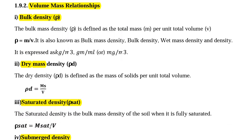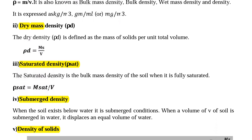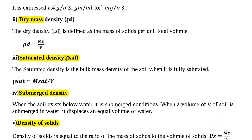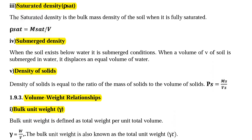Next we are going to see dry mass density rho D. The dry mass density rho D is defined as mass of solids per unit total volume: rho D equal to Ms divided by V. Next, saturated density rho sat is the bulk mass density of soil when it is fully saturated. The formula is rho sat equal to M sat divided by V.